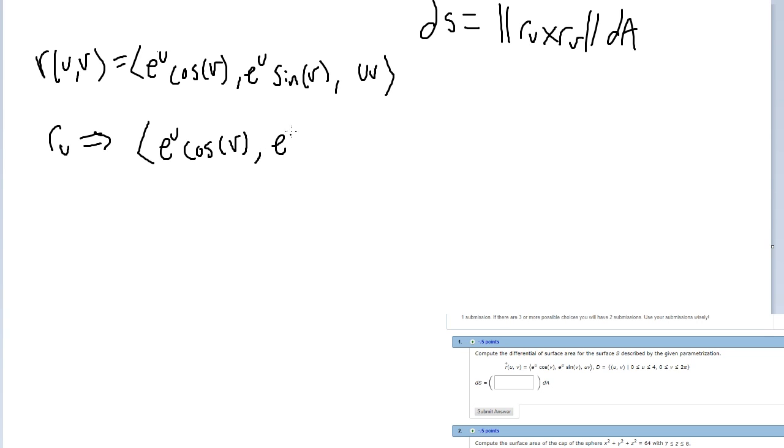That's going to go here: u sine v, and then we have v because the u drops away. These are really easy partials. I didn't expect them to be this easy when I was reading the problem.